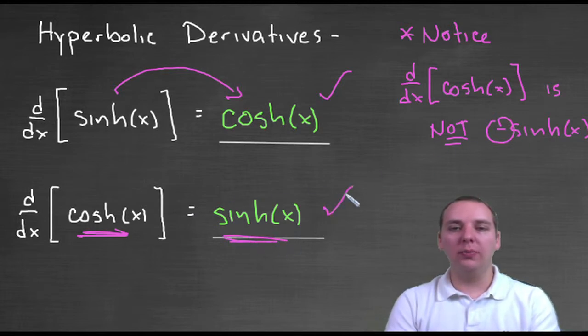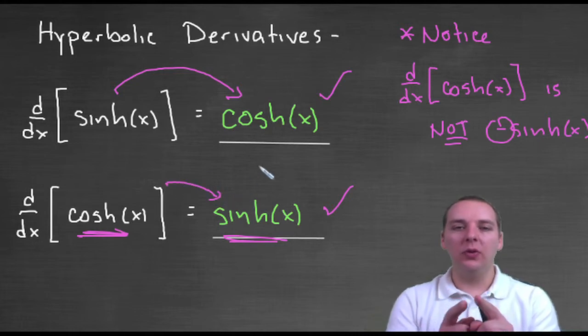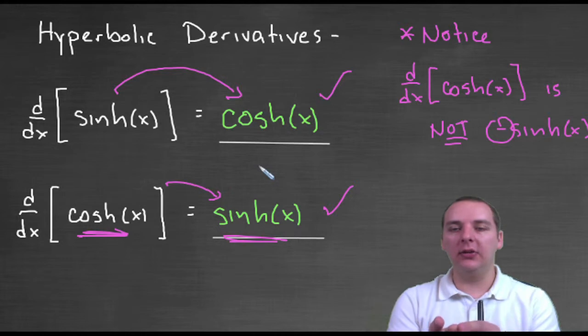The derivative of hyperbolic cosine is not negative hyperbolic sine. It's just regular, regular plain-jane, you know, hyperbolic sine. So there's never any change in sign when you take one of their derivatives and it turns into another one. It's a very common mistake that students make, and it's easy to make that mistake.